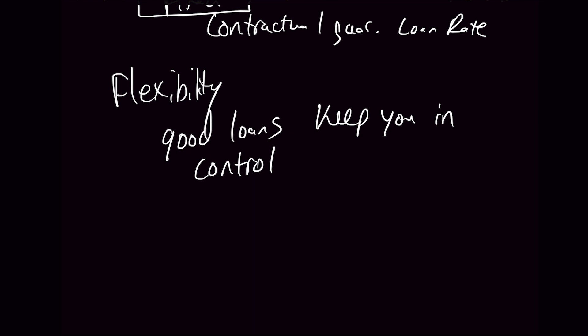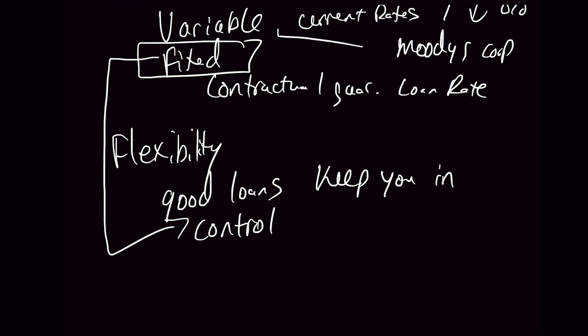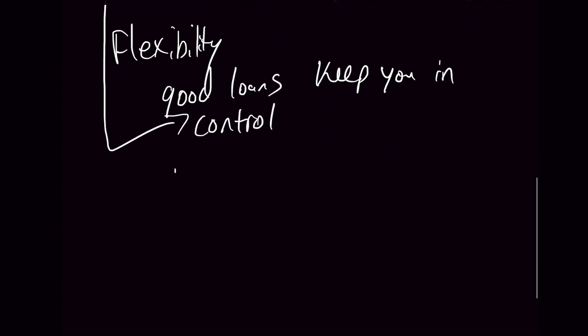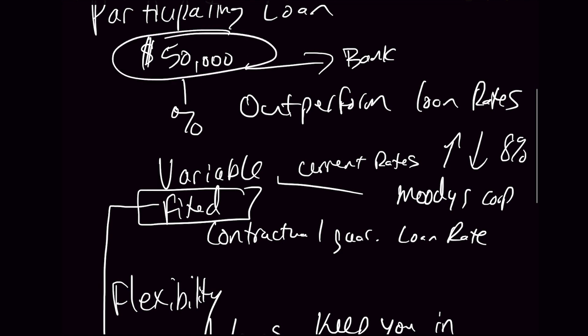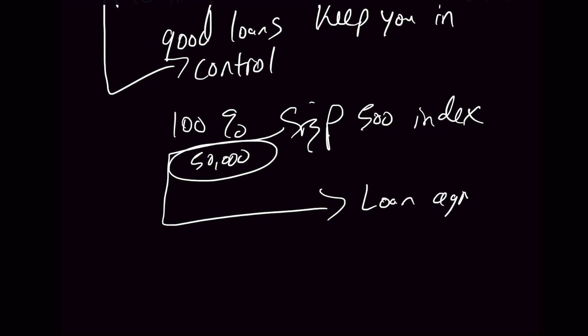That may sound foreign to you because why wouldn't they let you choose what index you're invested in? Well, there are a lot of loan provisions where as soon as you choose their fixed participating loan provision — let's say you've got 100% of your dollars in the S&P index and you take that $50,000 loan — the company is going to take $50,000 out of your S&P index and deposit it into a loan agreement account. That loan agreement account is essentially a separately published index that has its own participation rates, its own caps, its own crediting methodology, and you don't get to choose where that $50,000 is going. The company chooses for you.